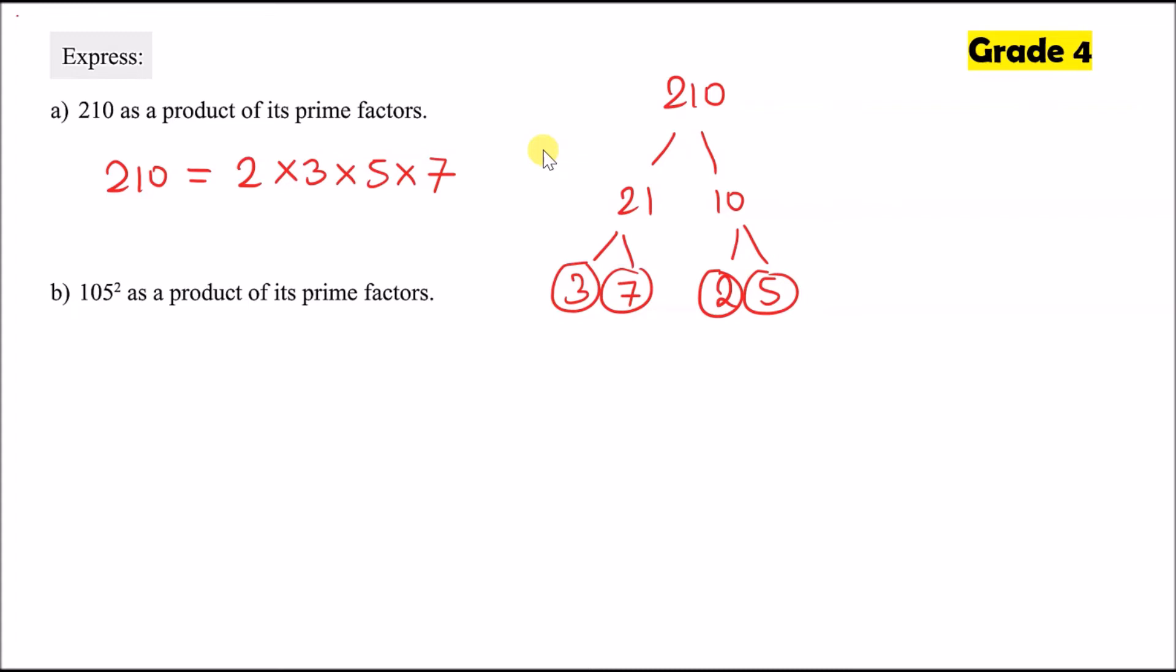Now for the next part, we're going to express 105 squared as a product of its prime factors. 105 squared literally just means 105 and another 105 multiplied together. But what we're going to do, we're going to make it a bit more clever. We're just going to work with 105 once. And whatever we get, we're just going to double the powers because you've got two of them. So check it out. So 105, we can break it down. We can divide it by 5.